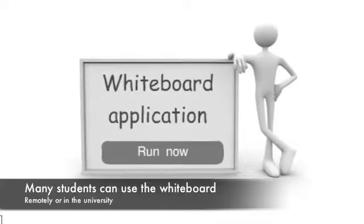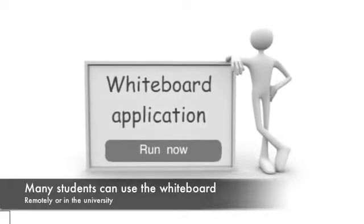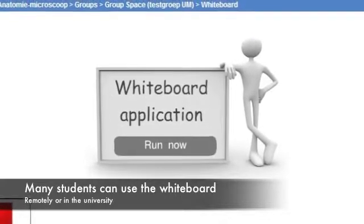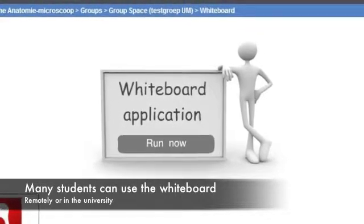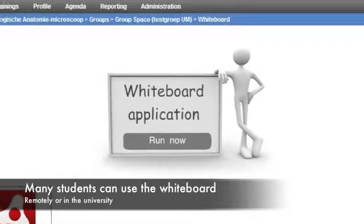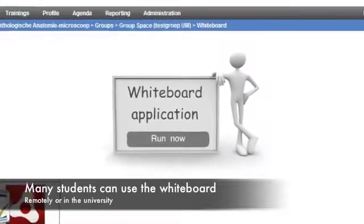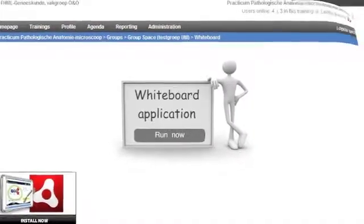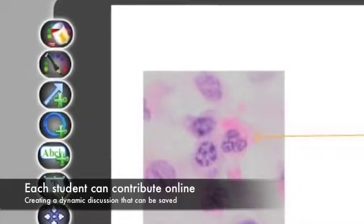What we developed for that in collaboration with a company and the research development here is a system where we use a whiteboard where more people can get access to and they see the live changes on it. They can paste a part of what they've seen on the screen, make a screenshot, paste that in the whiteboard, and make annotations. When something changes on the screen in this whiteboard, everybody sees the same, and every student has his own color for the annotations. So you see a lively discussion then on the whiteboard.